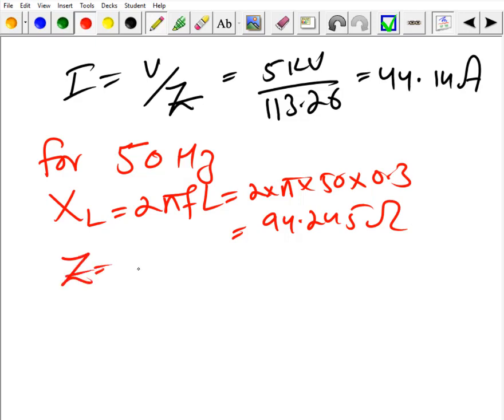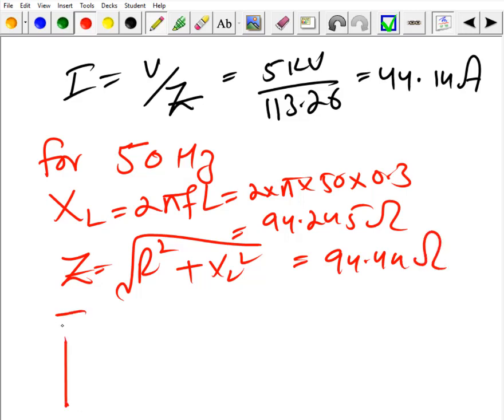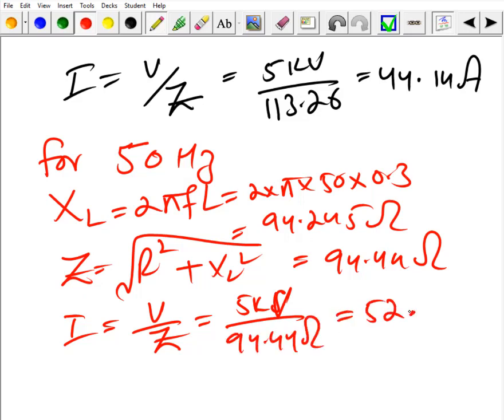Similarly, I will be V over Z, and V is same 5 kilovolt divided by 94.44 ohms, and this is 52.94 ampere.